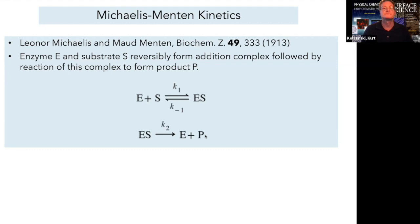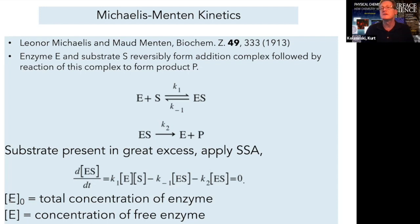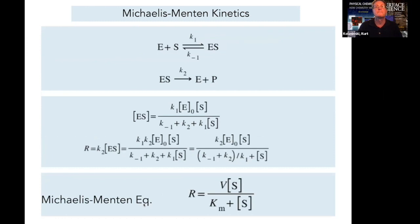Let's assume that the substrate is present in great excess and apply the steady-state approximation. So we want an expression for the rate of change of the formation of the intermediate, the complex, and we're going to set that equal to zero according to the steady-state approximation. I'm going to introduce the total concentration of the enzyme E naught and its concentration of the free enzyme. That would be E in the square brackets here. The free enzyme plus the complex enzyme, all of that has to add up to the initial concentration.